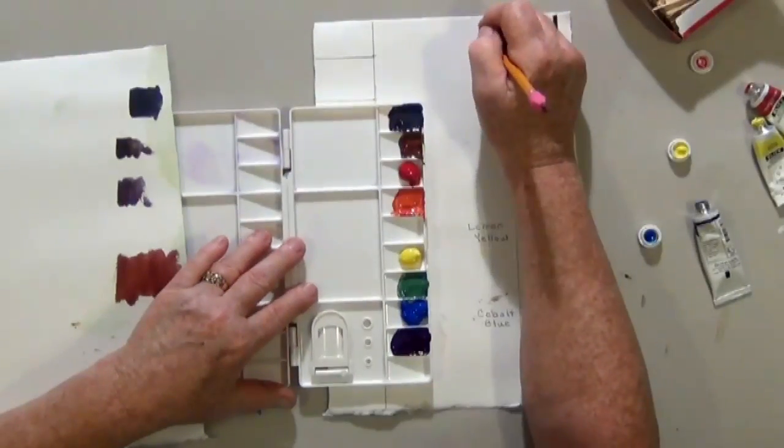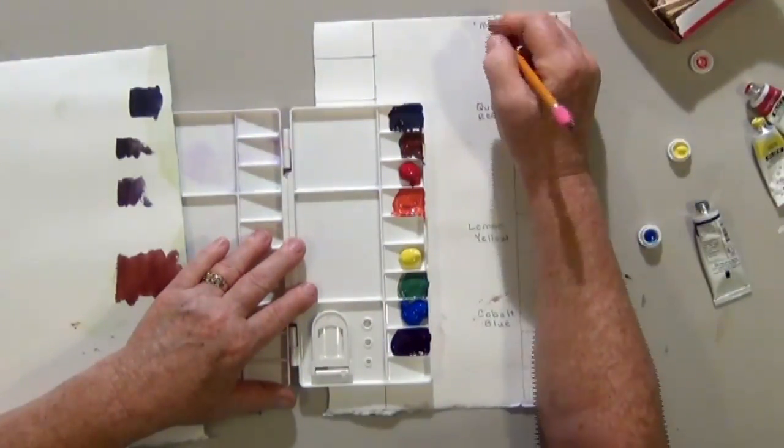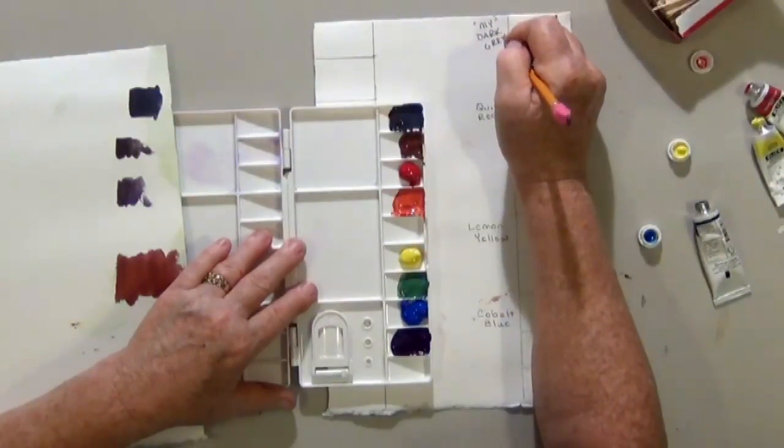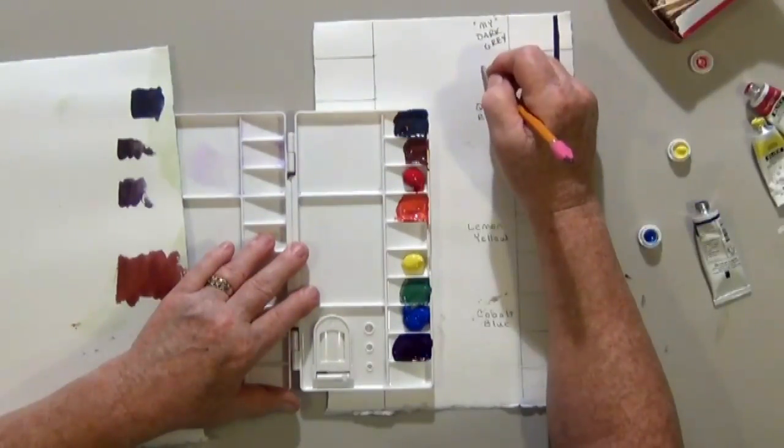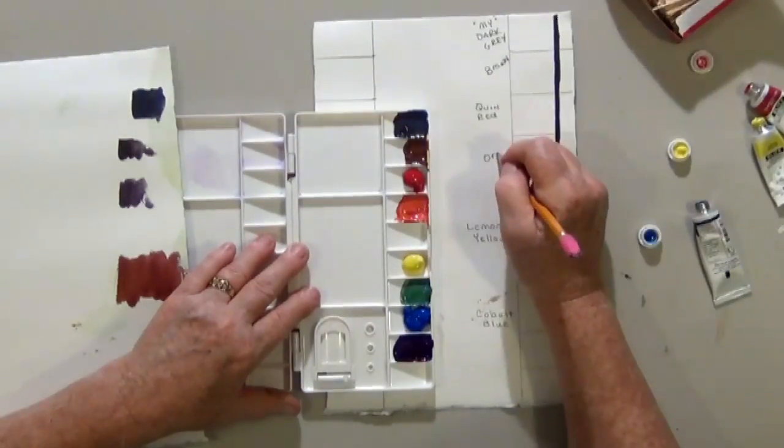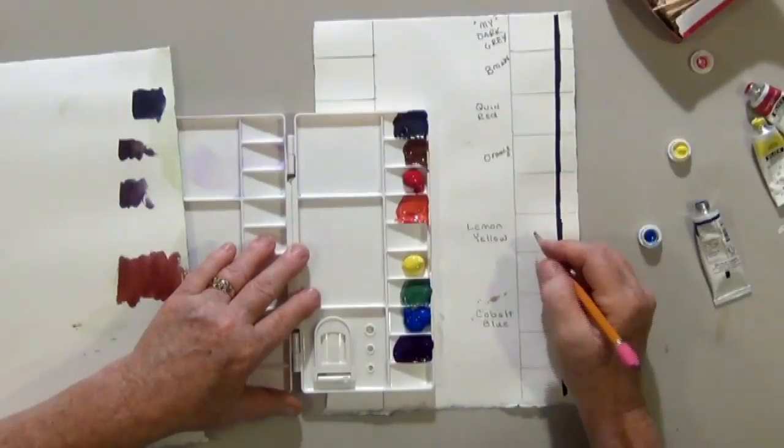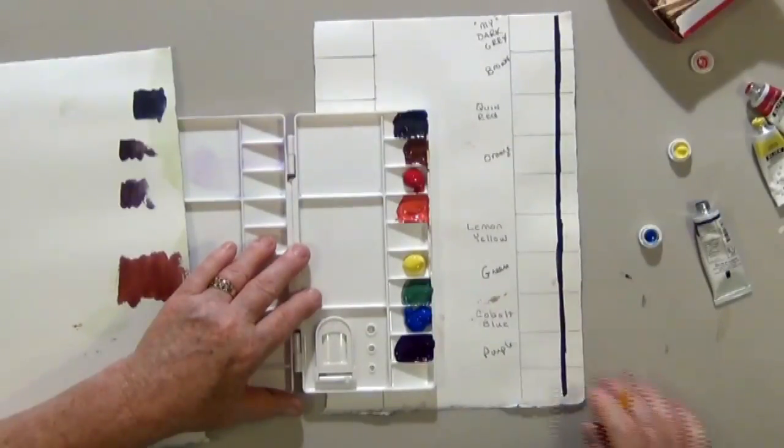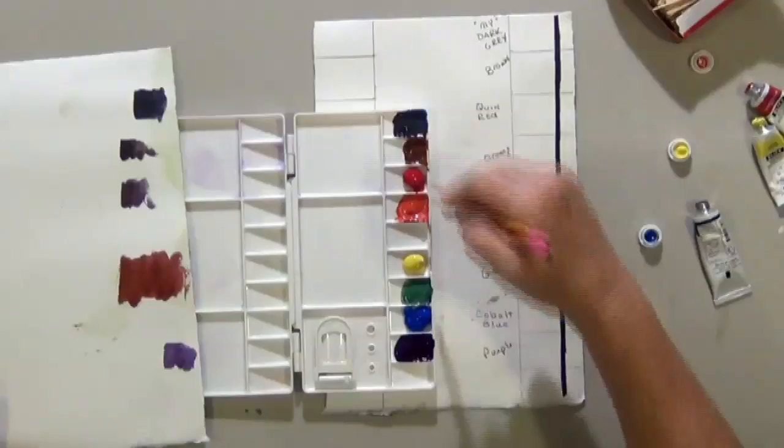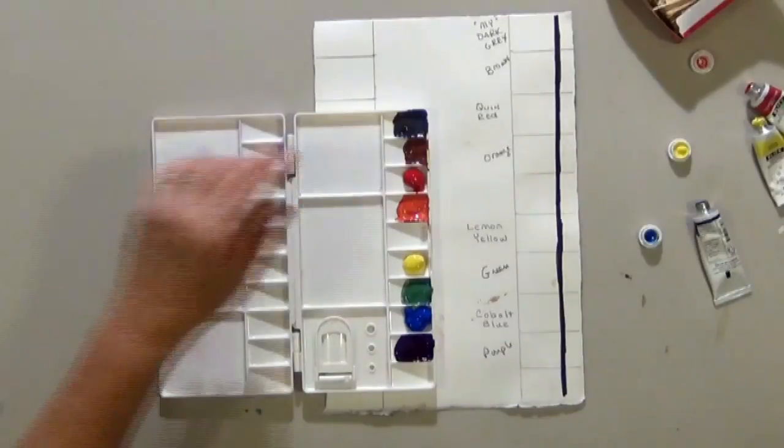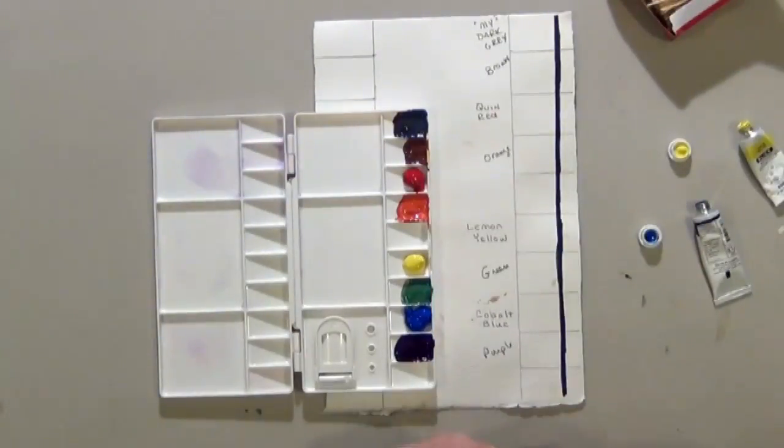And I'm going to label that. My dark gray. This was our brown that we mixed. This is our orange. This is our green. This is our purple. And that leaves two extra wells in case we want to mix another variation.